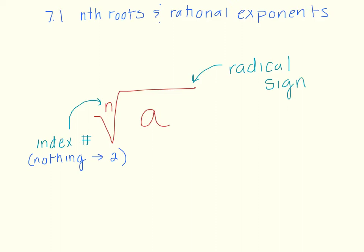For example, in square roots we need to look for pairs to take things out. If our index number is 3, I need 3 of a number in order to take it out. Lastly, we call the number inside our radical a radicand. So this terminology is important — it's going to come up a few times when we refer to this value.